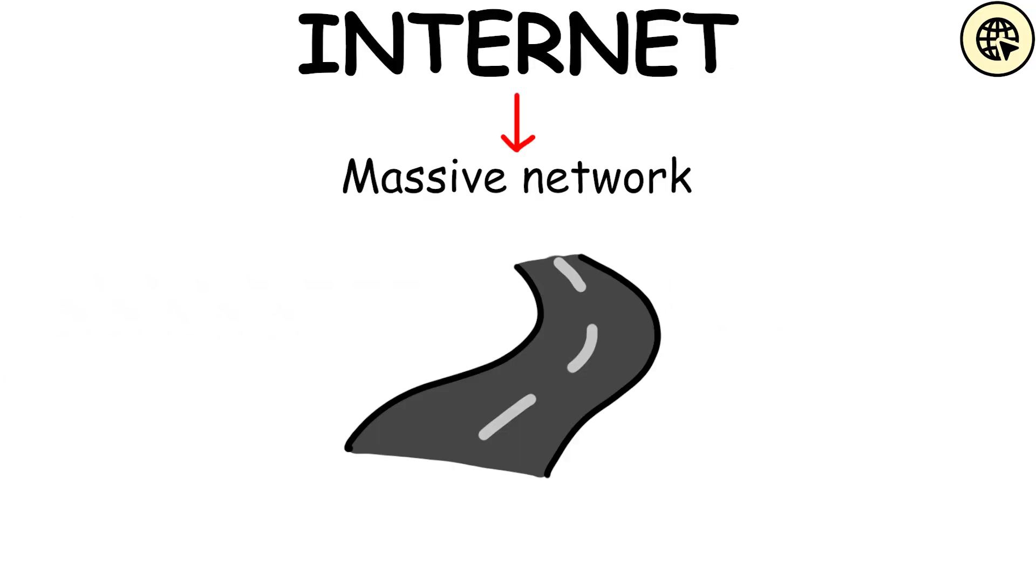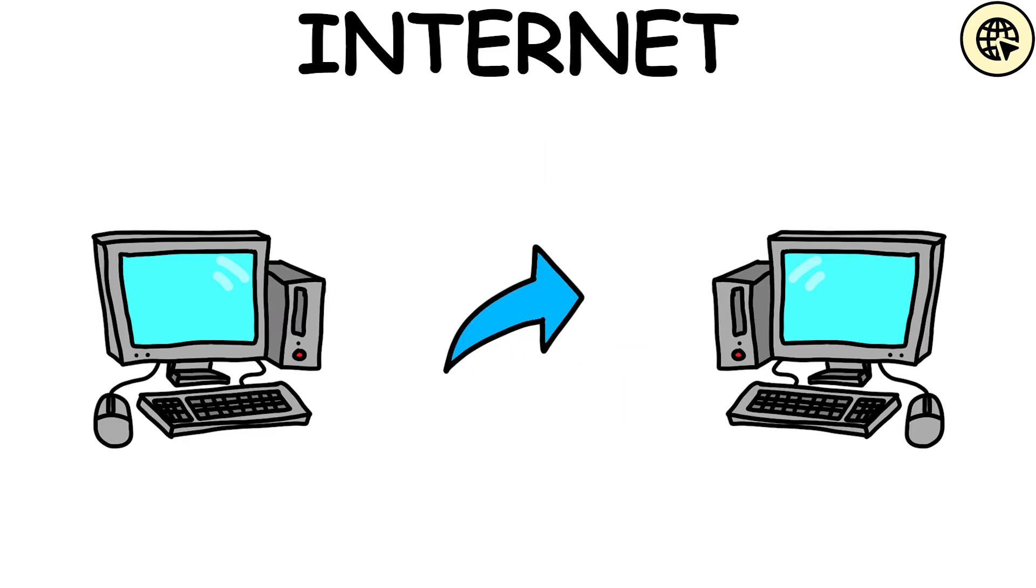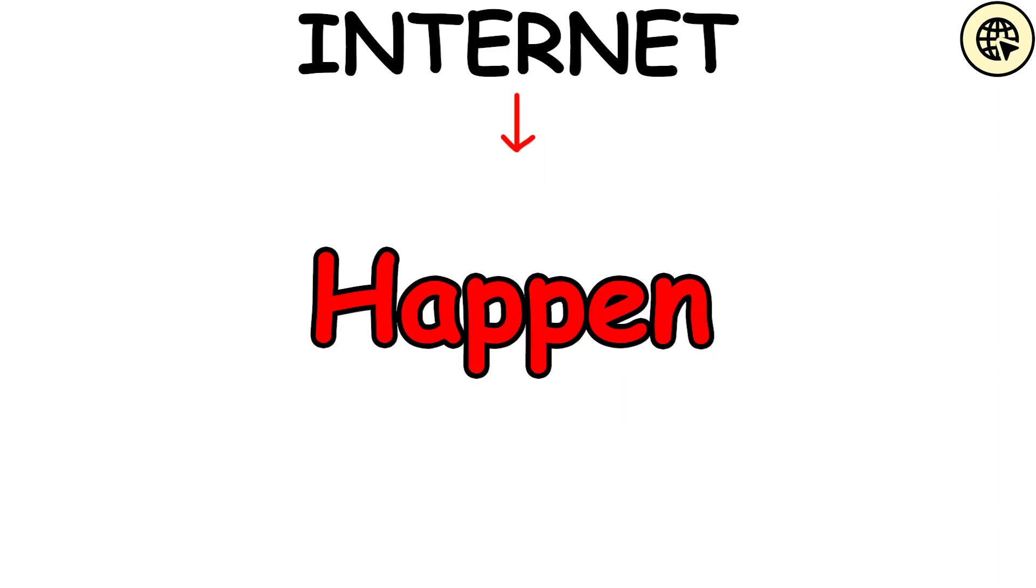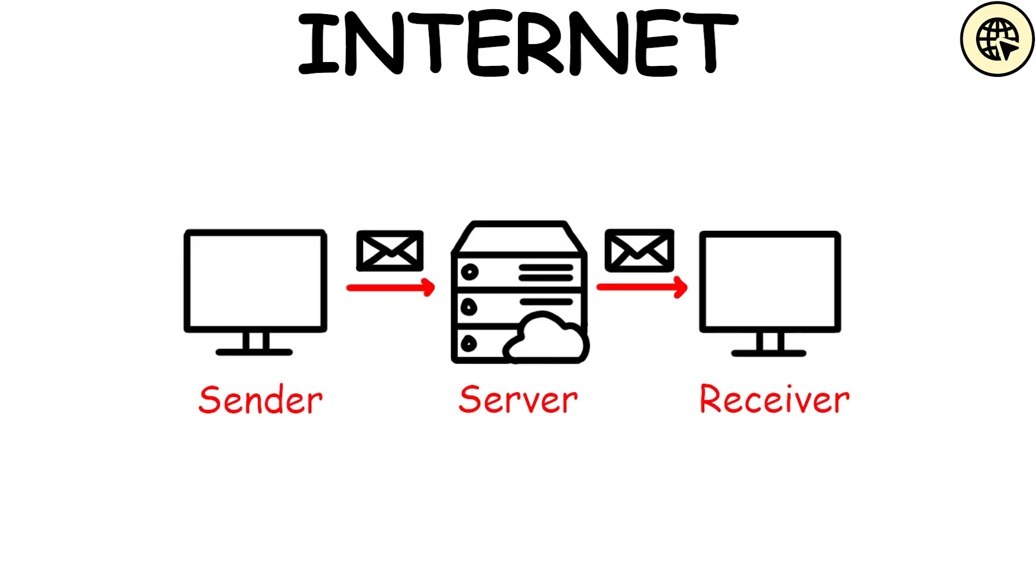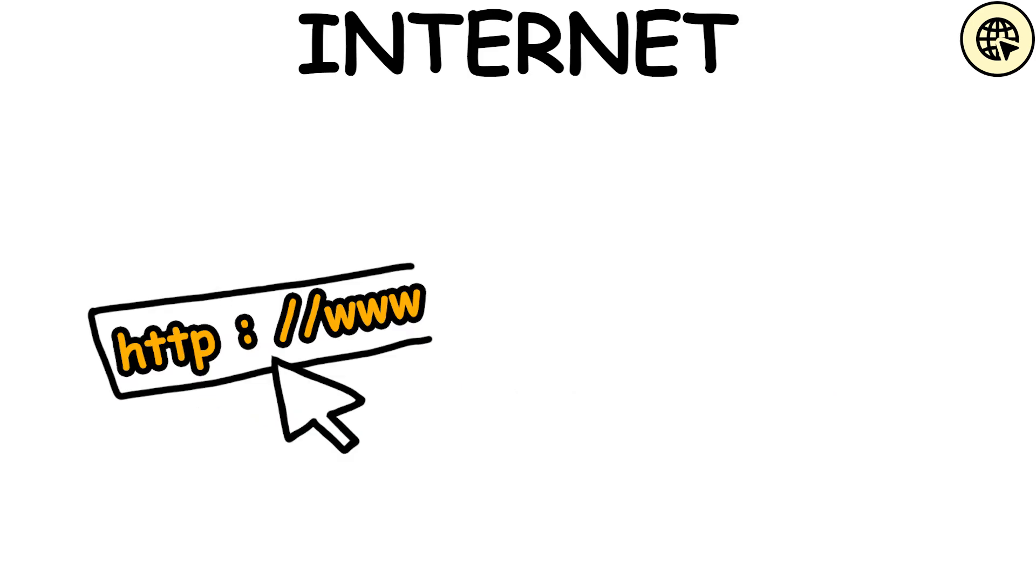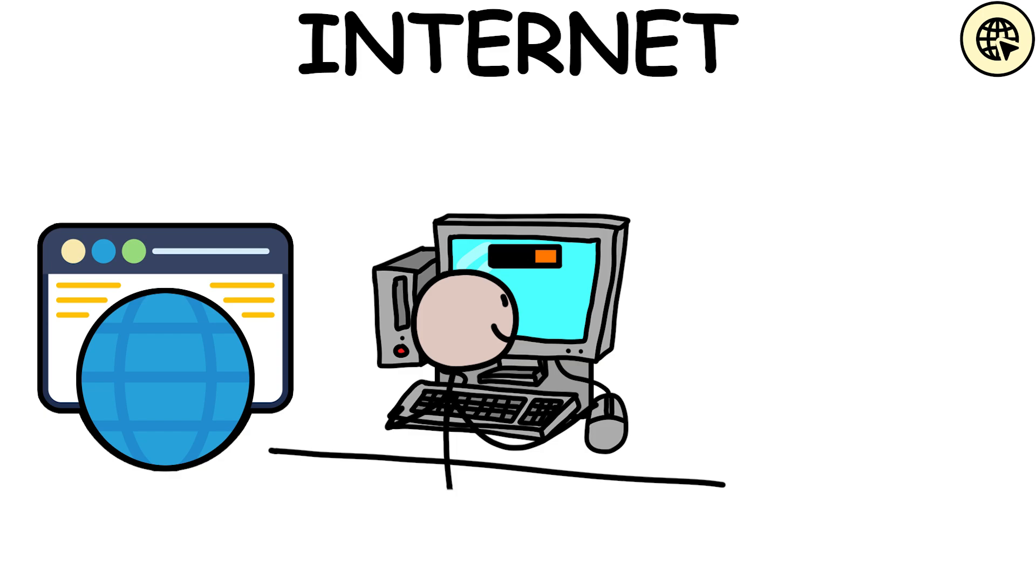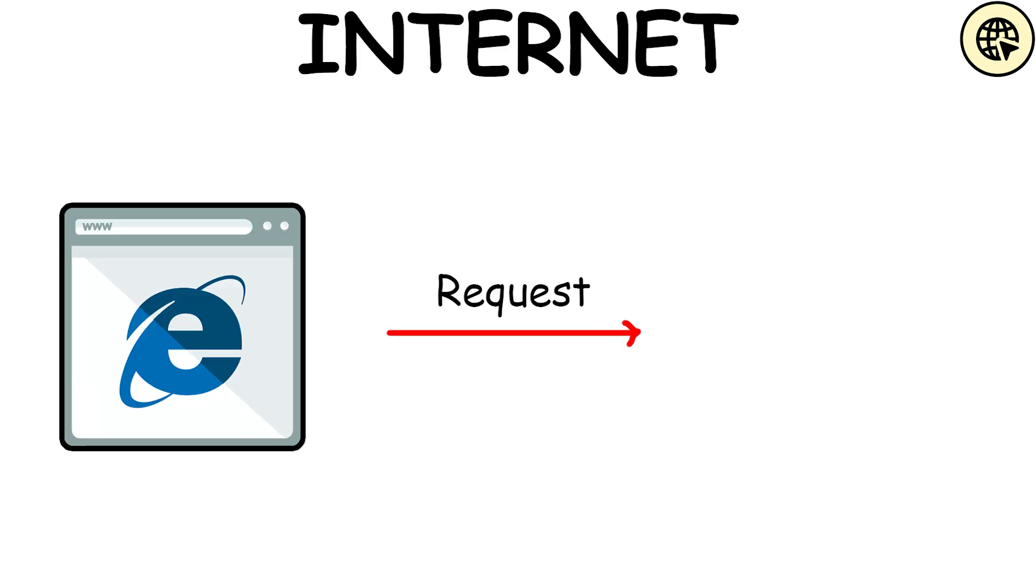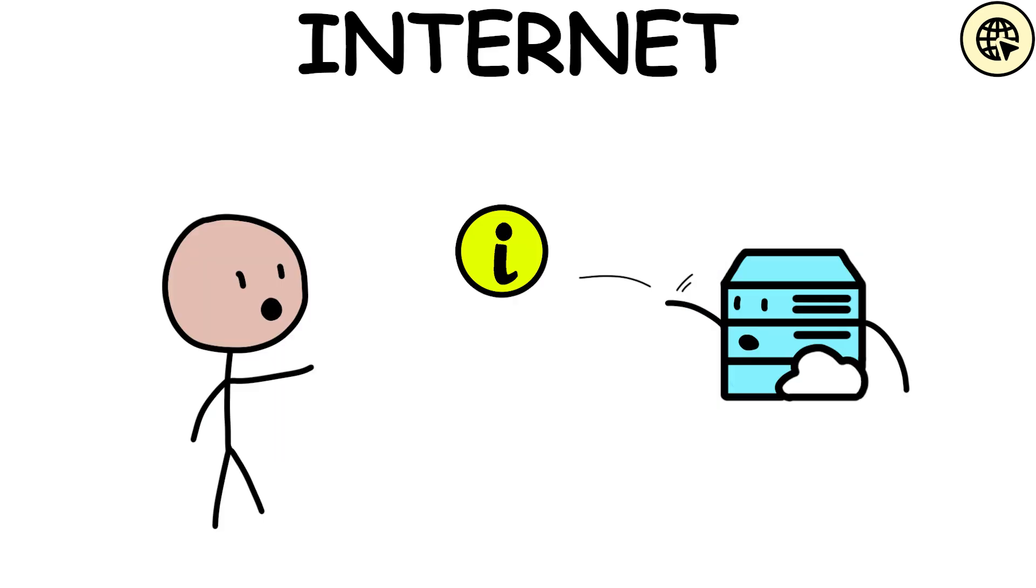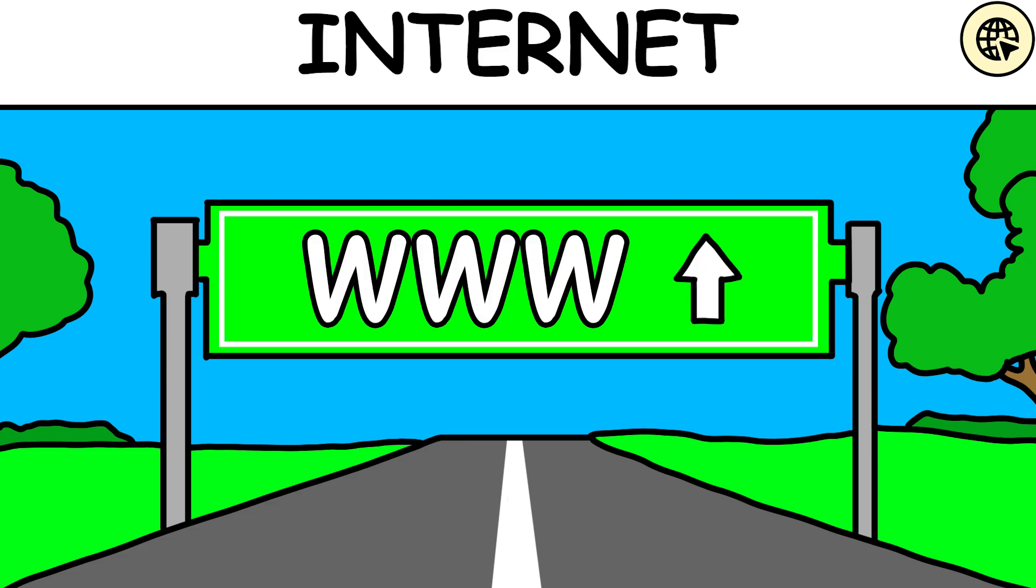The Internet is like a massive network of roads that connect computers all over the world. It enables communication and sharing of information between these computers. To make this happen, computers use special rules called protocols, such as TCP or IP, to send and receive data packets across these networks. The World Wide Web is like a giant library on the Internet. It's where you can access websites and resources using web browsers. When you type in a web address, your browser sends a request using a protocol called HTTP, and then the server sends back the information you asked for. In a nutshell, the Internet is the highway system, while the World Wide Web is the collection of destinations you can reach using it.